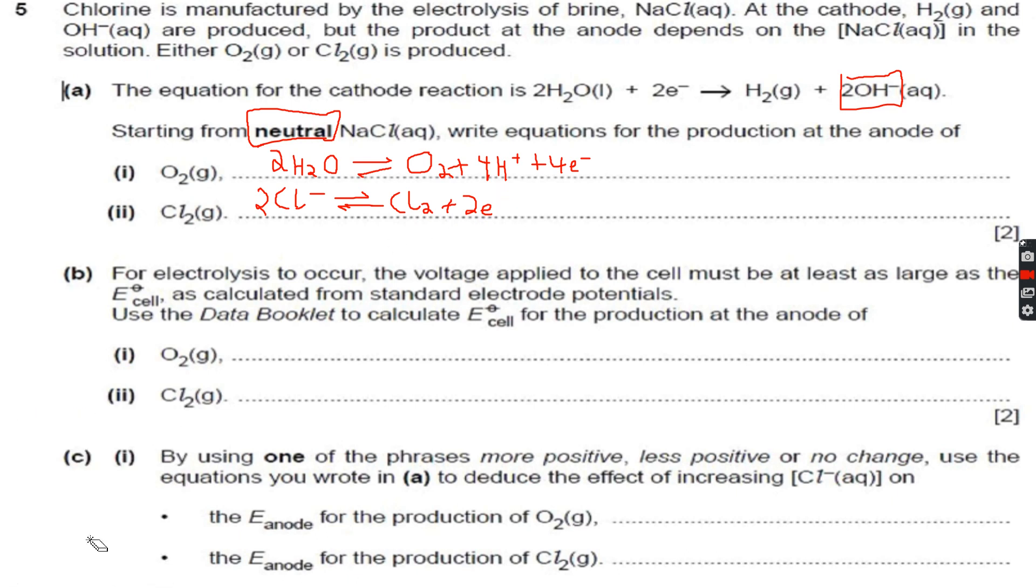For electrolysis to occur, the voltage applied to the cell must be at least as large as the E0 cell as calculated from standard electrode potentials. Use the data booklet to calculate E0 cell for the production at the anode of O2 and Cl2. For this we will first write their respective E0 values. This is minus 0.83 volts, then for the O2 half equation it becomes...